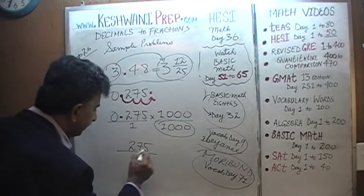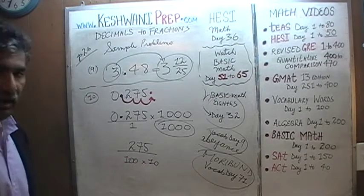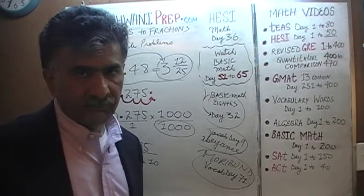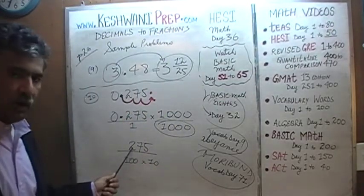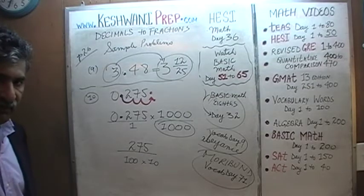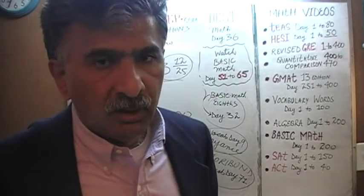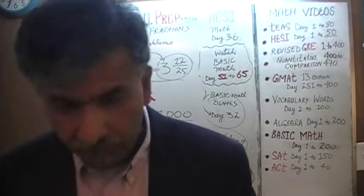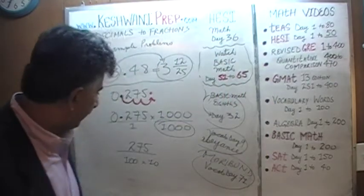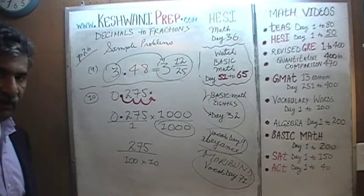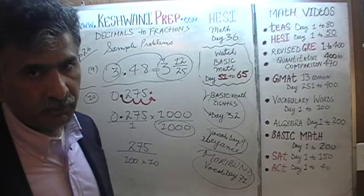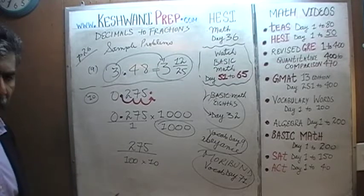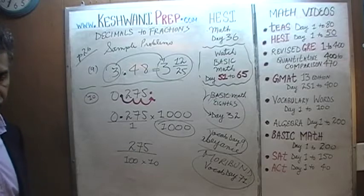We're going to write 1,000 as 100 times 10. I hope you can see immediately that 275 is a nice multiple of 25. Think of it in terms of money: if you have $2.75 and each quarter is 25 cents, how many quarters are in a dollar? A dollar has 4 quarters, so 8 quarters make $2. Another 75 cents gives you 3 more quarters — 8 plus 3 is 11 quarters. In other words, 275 is simply 25 times 11. So if we divide top and bottom by 25, we should get 11 on top. Shall we?